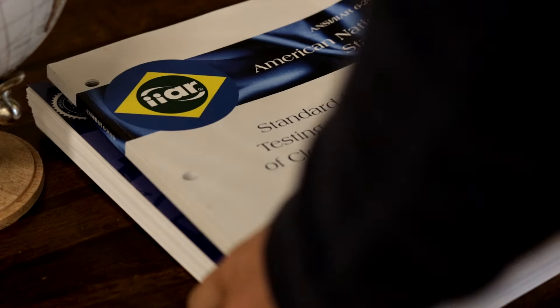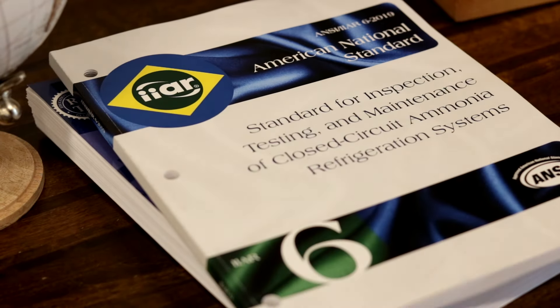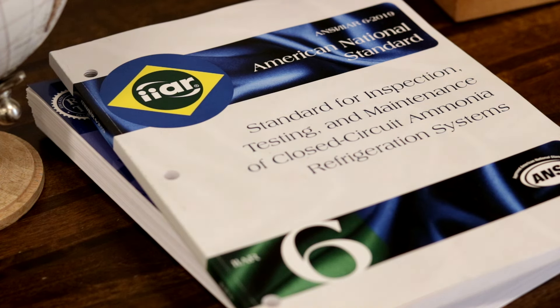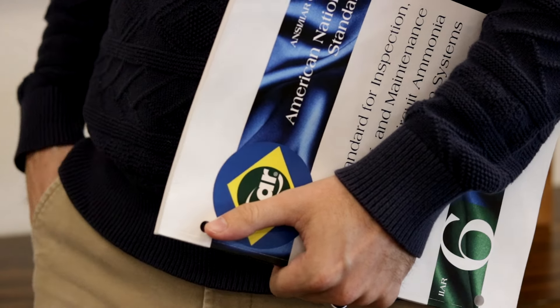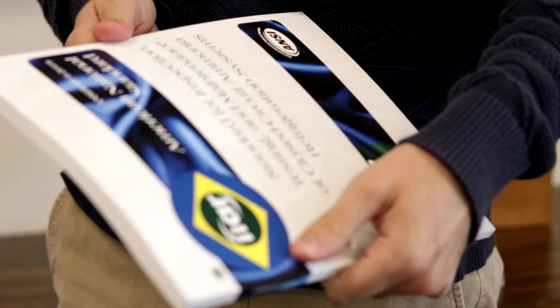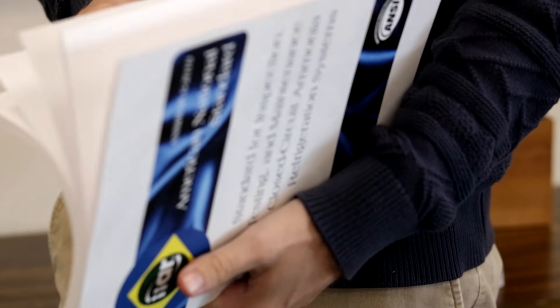The checklist questions contained in IIAR 6 Appendix B are derived from a legacy document named IIAR Bulletin 109. For years, the Bulletin 109 checklists, or B109s, served as the gold standard for documenting annual mechanical integrity inspections for ammonia refrigeration equipment. In 2019, IIAR retired Bulletin 109 when the first edition of Standard 6 was published.